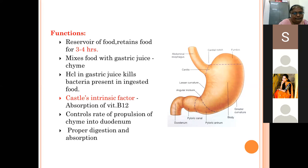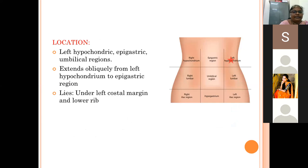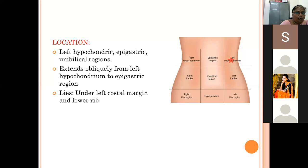The stomach occupies the left upper quadrant of the abdomen, or more exactly, the left hypochondriac and the epigastric and umbilical regions. Based on nine divisions of the abdomen — formed by two vertical mid-clavicular lines, the transpyloric line (upper horizontal), and the trans-tubercular line (lower horizontal) — the stomach occupies the left hypochondria, the epigastric region, and the umbilical region.